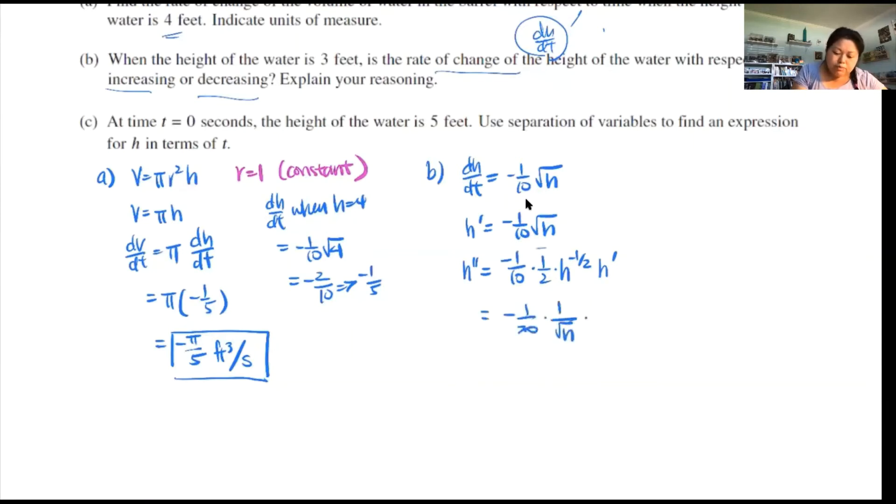Let's clean up a little bit. I get negative 1 over 20 times 1 over root h times h prime, so negative 1 over 10 root h. This is very interesting because you get 1 over 200 and then the root h's actually reduce each other out. So your second derivative is always going to be 1 over 200. It's always positive. Therefore, it is always increasing because this is a positive value.